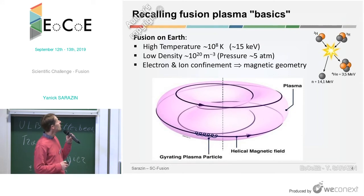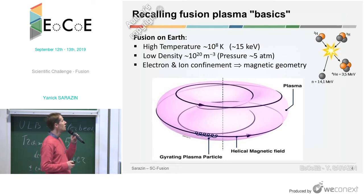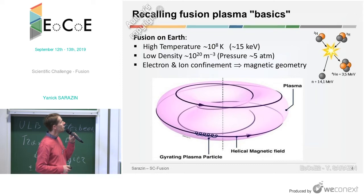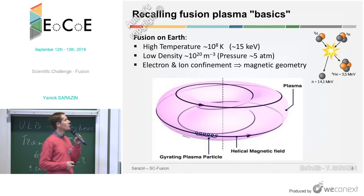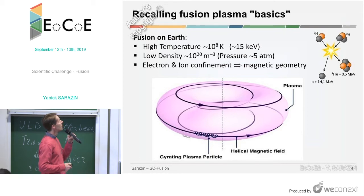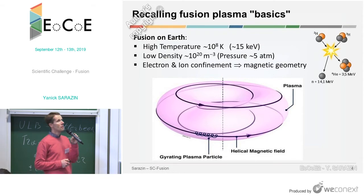Fusion on Earth deals with the fusion of hydrogen isotopes, which are deuterium and tritium, which have the highest reactivity. They produce a neutron and an alpha particle — a helium-4 particle — and the energy gain comes from the kinetic energy of those two particles. To reach fusion you need high temperature, which is ten times larger than the one in the core of the Sun.